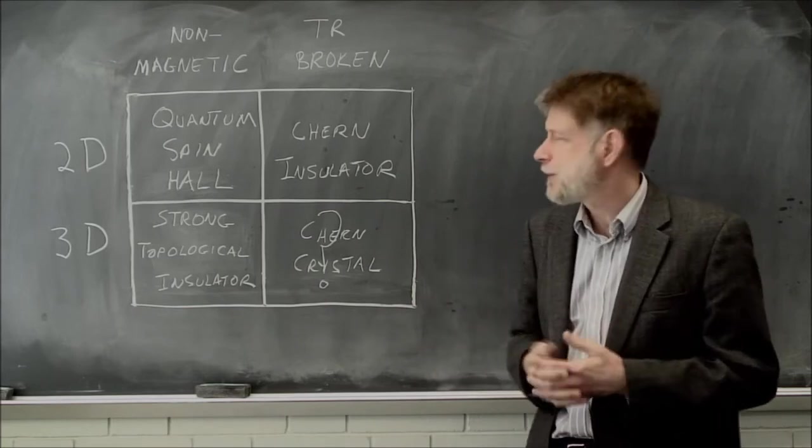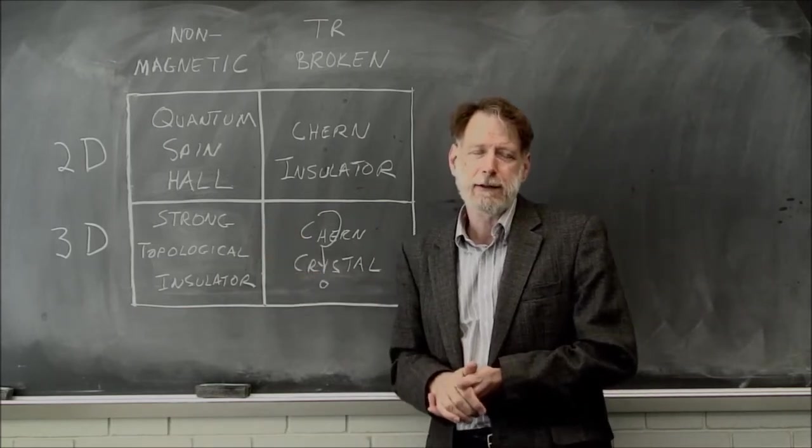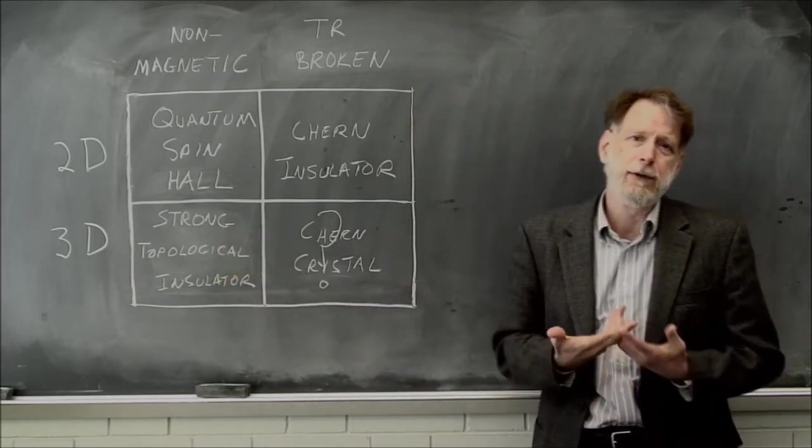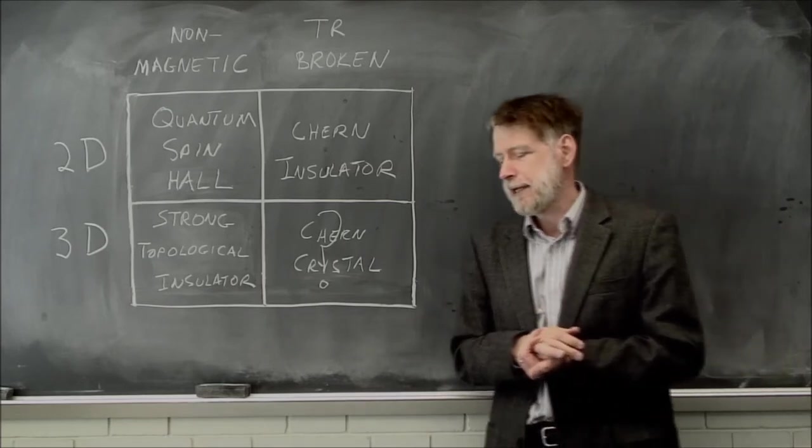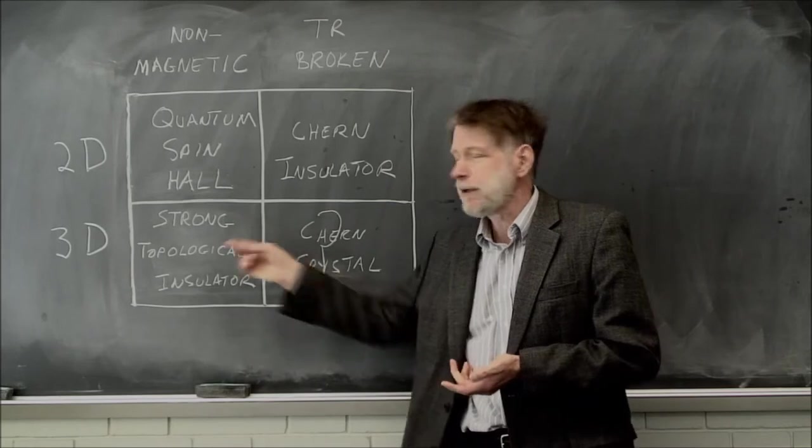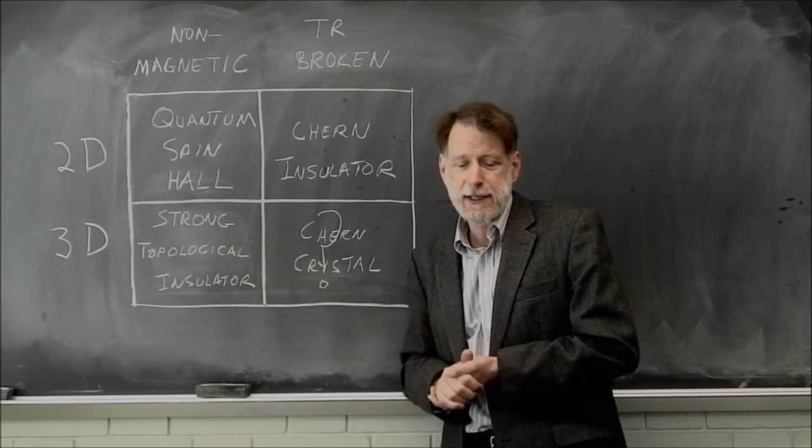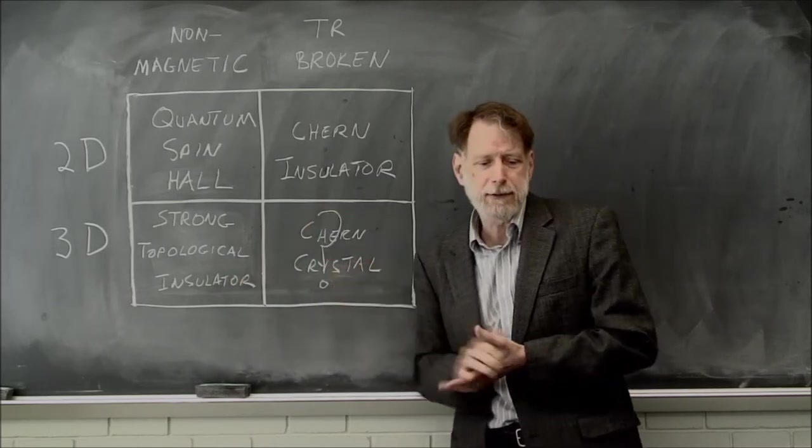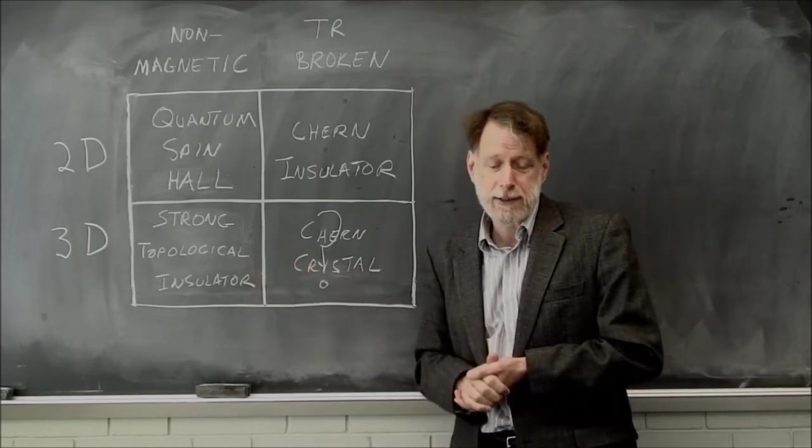So let's suppose that we wanted to find a new kind of strong topological insulator. The bismuth selenide class is good, but it has some problems. For example, the bulk conductivity is not as low as one would like. It tends to be leaky, and therefore measurements of the transport properties of the surface states are complicated. So anyway, we'd like to find new materials realizations. What do we need in order to find something like this?